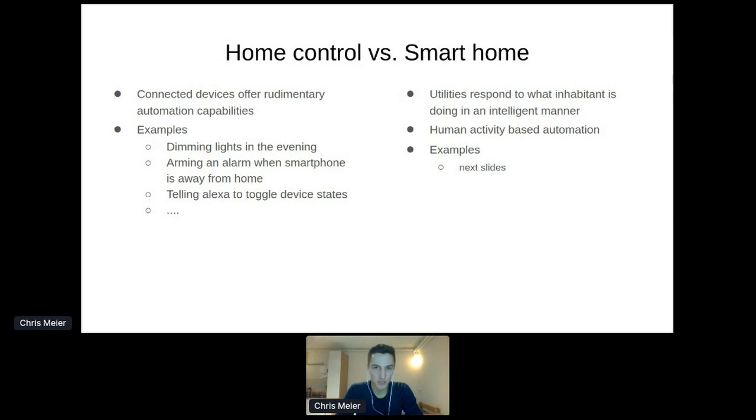So what distinguishes a smart home from home control is the property of devices responding to what an inhabitant is doing in an intelligent manner. What does a smart home user do? Activities of daily living such as eating, sleeping, cooking and so on. What is the response of devices? In terms of Home Assistant, it is automations. So from this definition of a smart home, it gives natural rise to human activity-based automation.